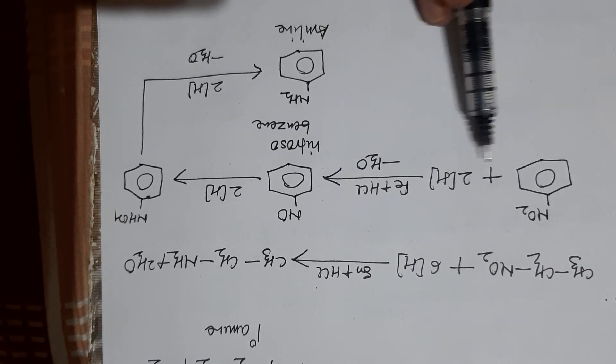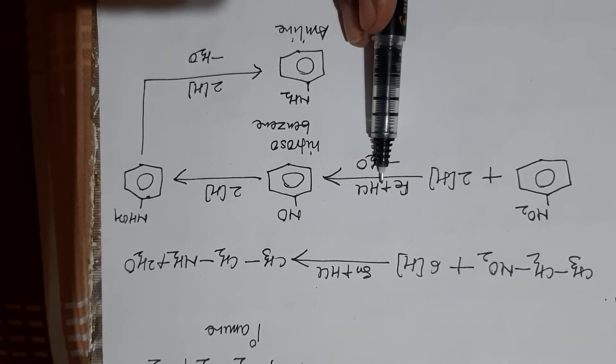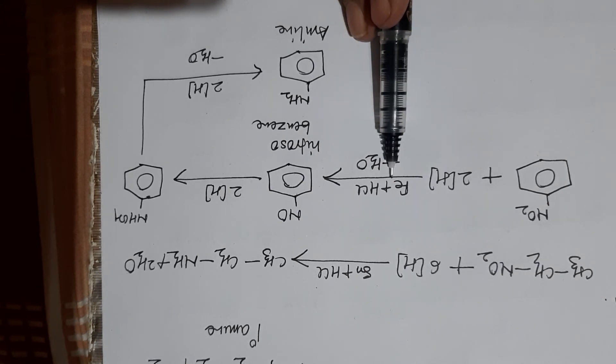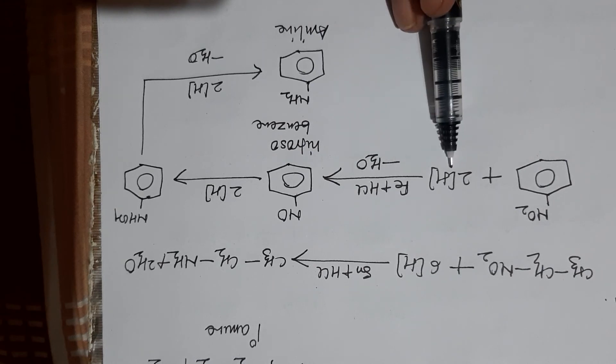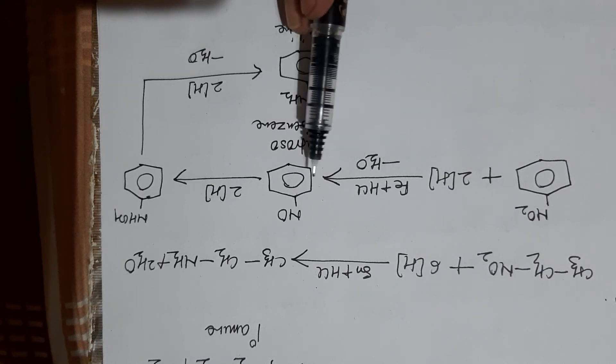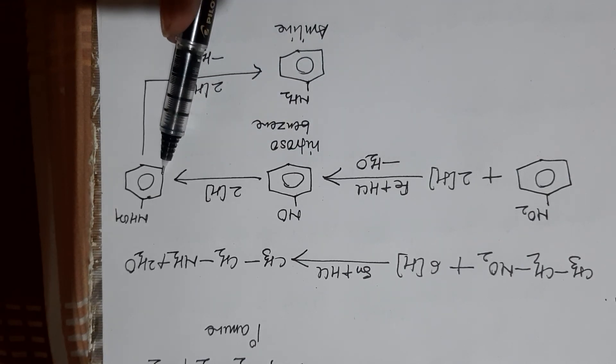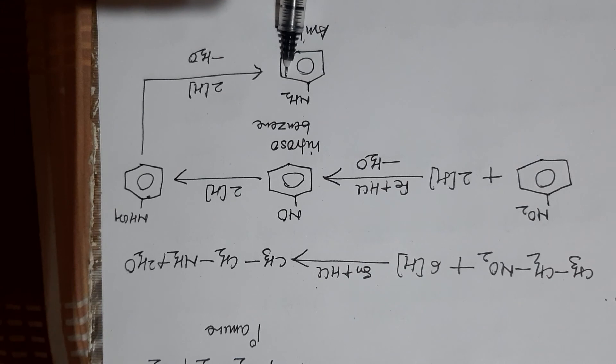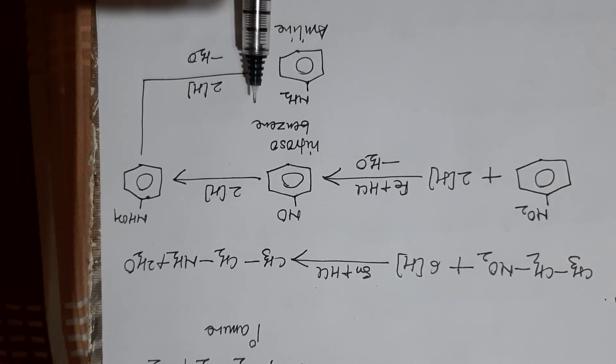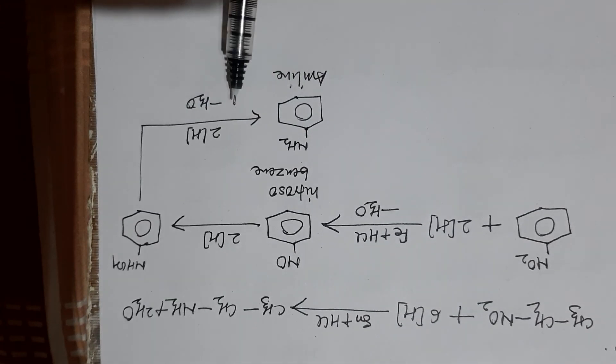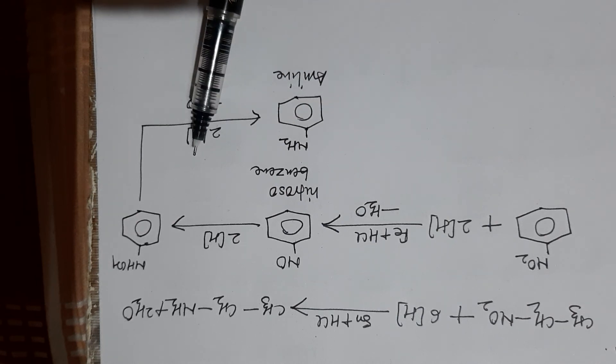Nitrobenzene undergoes reduction in three ways: in acidic medium, in basic medium, and in neutral medium. In acidic medium, only six hydrogens will be used. In the first step, two hydrogens give nitrosobenzene, then phenylhydroxylamine, and finally aniline will form. So I think you are getting that how to prepare primary amine by the reduction of nitro compounds. Thank you, have a nice day.